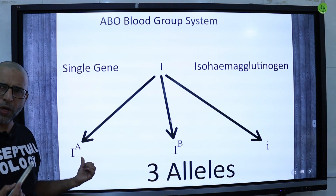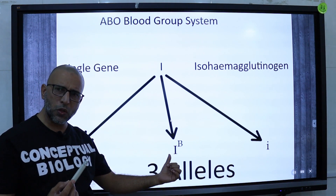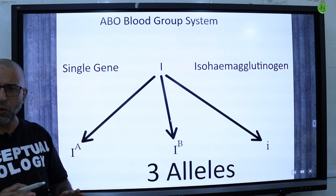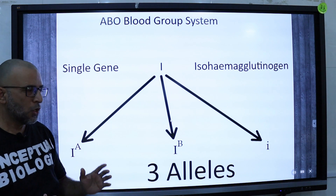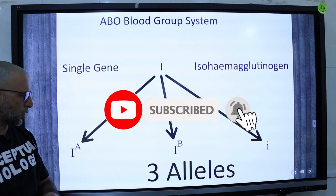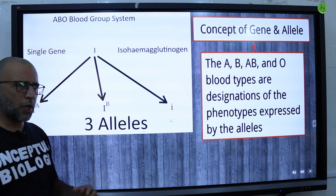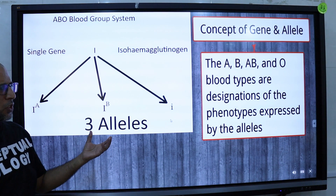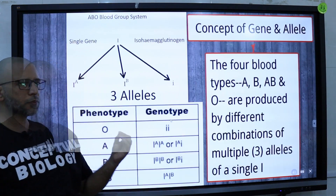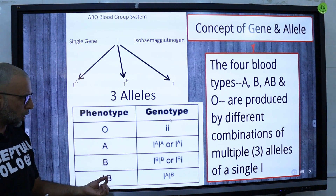The IA allele codes for the A molecule on the red blood cell. The IB allele codes for antigen B molecule on the surface of the red blood cell, and the lowercase i allele codes for no molecules on the surface of red blood cells. Antigen A and antigen B, which are present on the surface of red blood cells, are controlled by alleles IA and IB. Blood types A, B, AB, and O are designations of phenotypes which are expressed by these alleles.